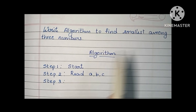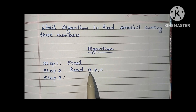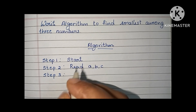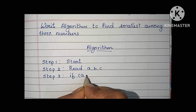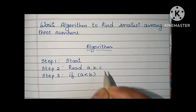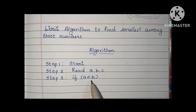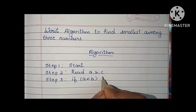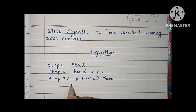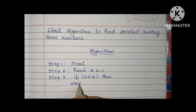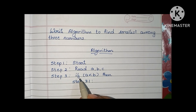In step three, we have to find the smallest among three numbers. First, we have to compare two variables: a and b. If a is less than b, and this condition is true, then we move to step 3.1.